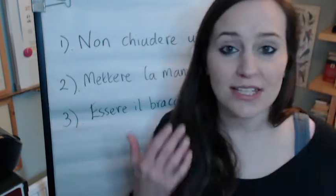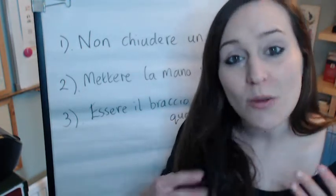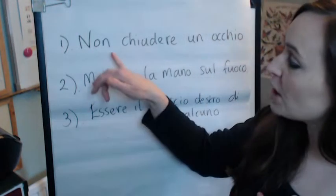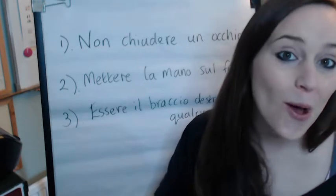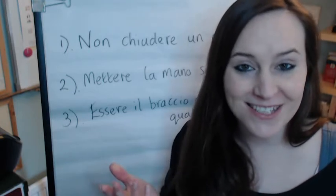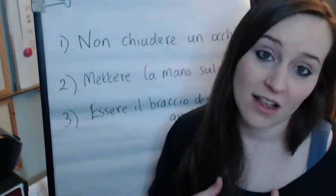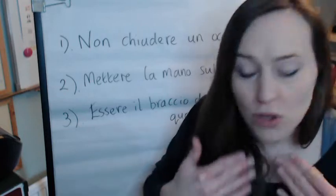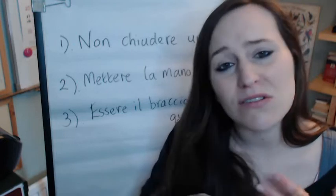In English we have a translation for this. We have a kind of equivalent which is 'not to sleep a wink.' A wink in English — and so if you say 'I didn't sleep a wink last night,' that means you didn't sleep at all. In Italian you could say non ho chiuso un occhio stanotte — I didn't shut one eye, like I didn't sleep at all.